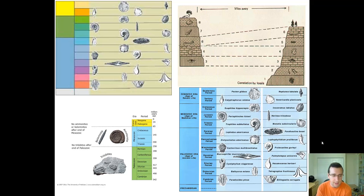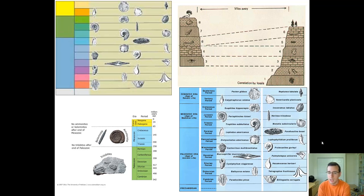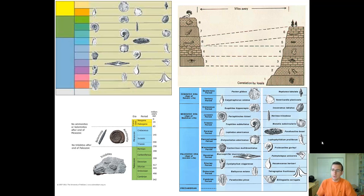For example, if you find a trilobite in a rock, you know it must be from the Paleozoic era, because no rocks after the Paleozoic contain trilobites. Trilobites went extinct at the end of the Permian period, meaning that if you see trilobites, the rock must be at least 250 million years old. That shows how you can use index fossils to help date rocks.